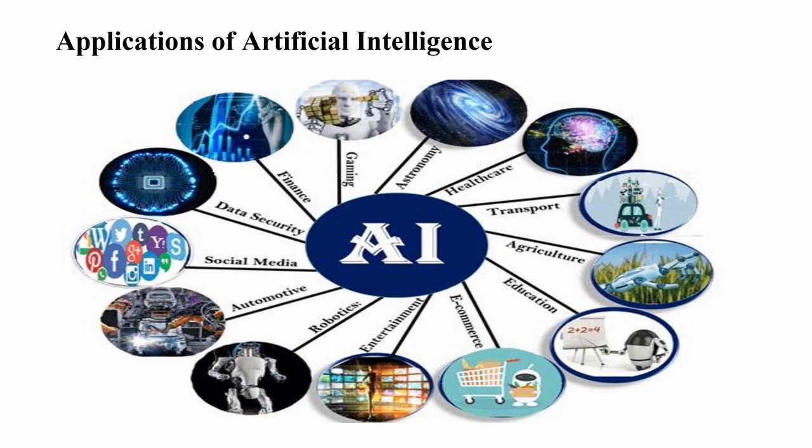The next point is applications of artificial intelligence. In the diagram, multiple applications are shown: finance, gaming, astronomy, healthcare, transport, agriculture, education, e-commerce, entertainment, robotics, automotive, social media, and data security. These are various applications of AI, or different domains where artificial intelligence can be used.